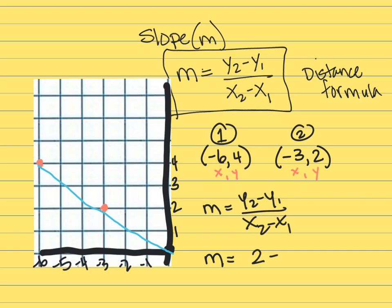Minus y1. Well, that's y from this guy for x2. That's coordinate 2 and this is x, negative 3 minus x1. Well, that's x from the first coordinate, negative 6.